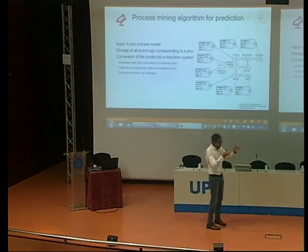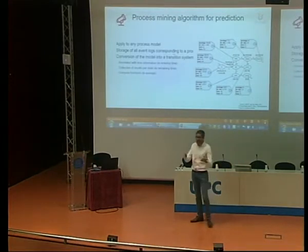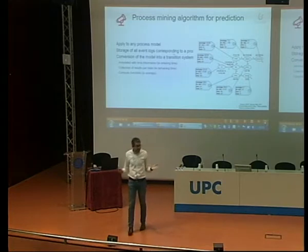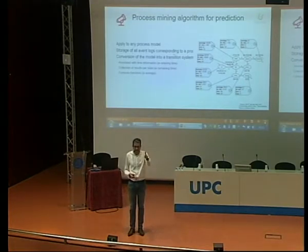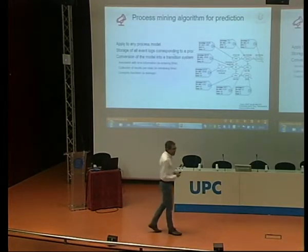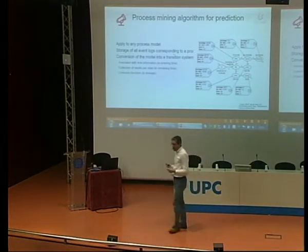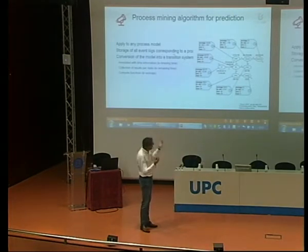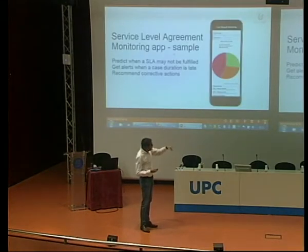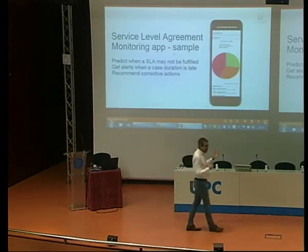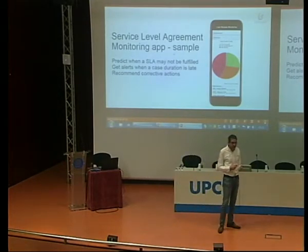For every step in the process, you know when the step starts and when it ends. You annotate it with different information — for example, time-related information. Then you can calculate and apply different functions, like average. This is exactly the implementation we did. This is the kind of application you can have for implementing, on top of a BPM platform, an algorithm using process mining extension.